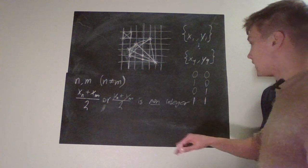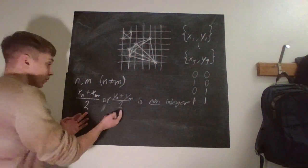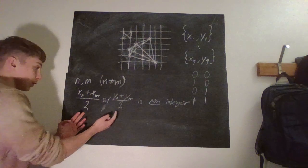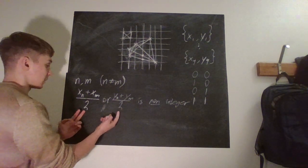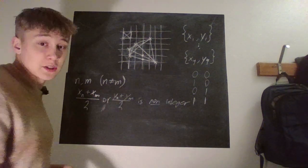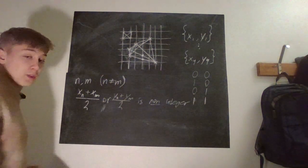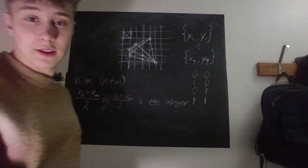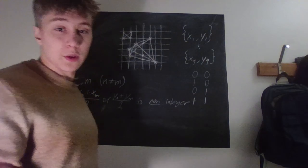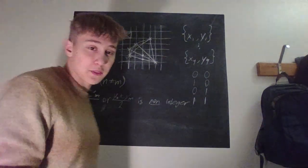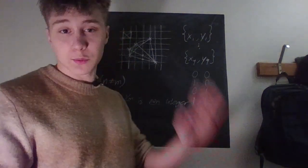Then it will yield, well then both the coordinates for the midway point will be integers, and therefore it will be on the junction. Yeah, sorry I'm a bit confused today, but I hope you understood anyway. Yeah, that was basically everything for me. Hope you enjoyed the video, have a good one, bye.